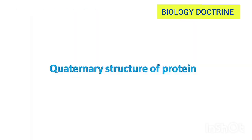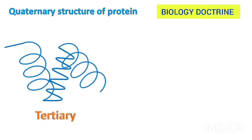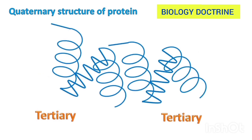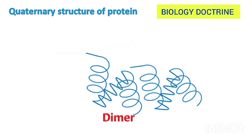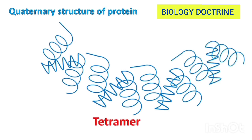The next one is the quaternary structure of protein. If tertiary structures are aggregated and combined, a new structure arises — the quaternary structure. If two tertiary structures combine, it forms a dimer. If three combine, it forms a trimer. If four combine, it forms a tetramer.